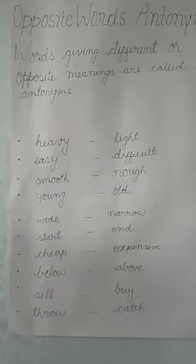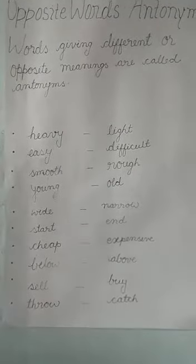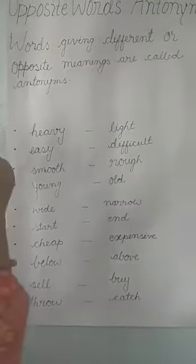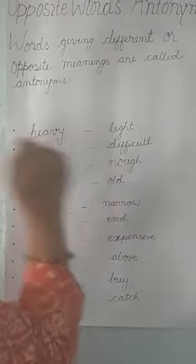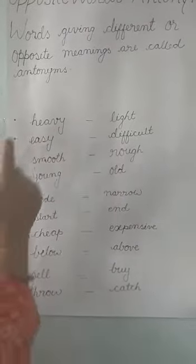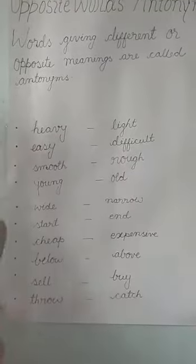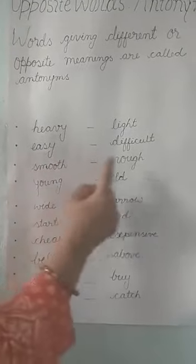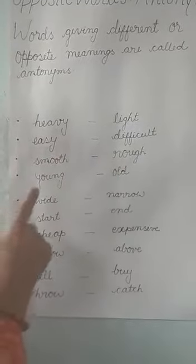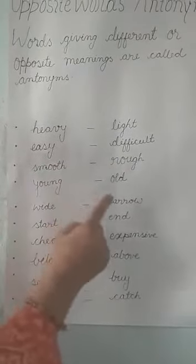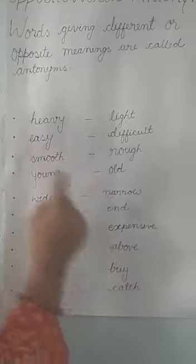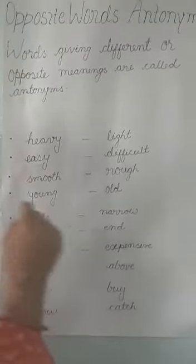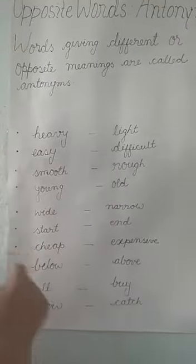Let's look at the examples. Opposite of heavy is light. Opposite of easy is difficult. Smooth and rough. Young and old. Wide and narrow. Start and end. Cheap and expensive.